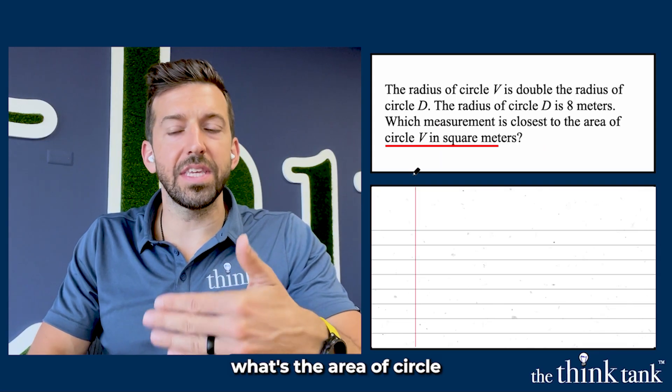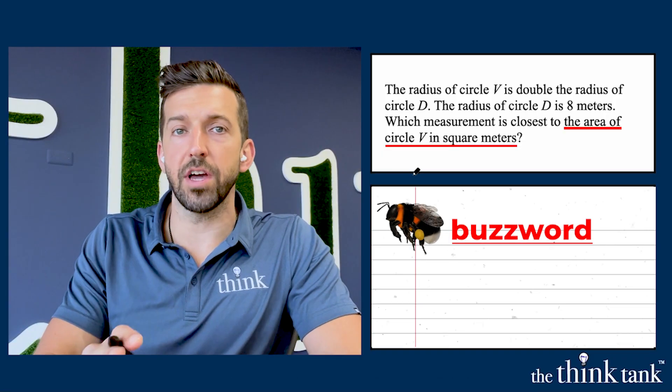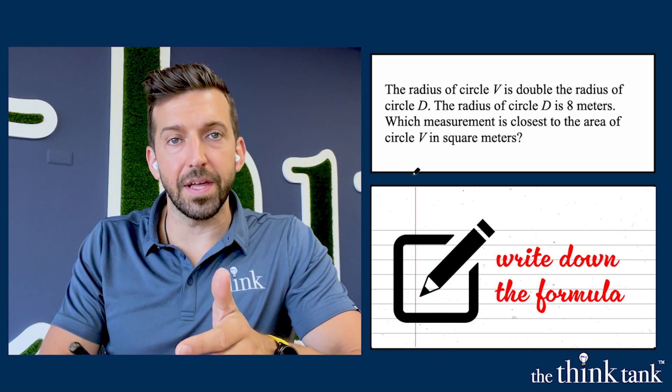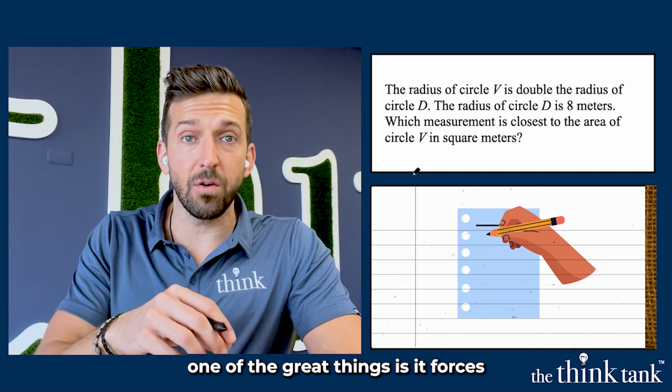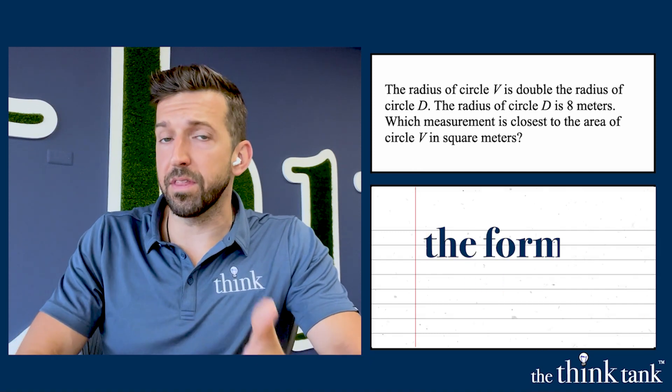Now we want to find out what's the area of circle V in square meters. Here's one of those buzzwords—when you hear a geometry buzzword like area, perimeter, or circumference, you need to write down the formula. It's super important that you learn to remember these formulas. Writing them down forces you to remember them a little bit better. The formula for the area of a circle, in case you forgot it, is area equals pi times the radius squared.